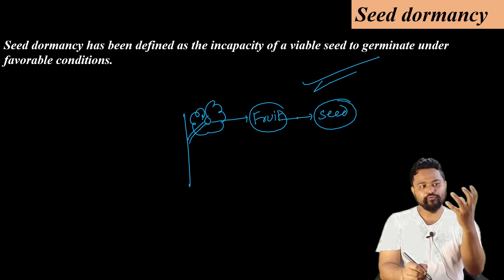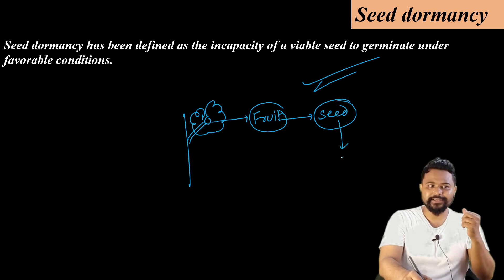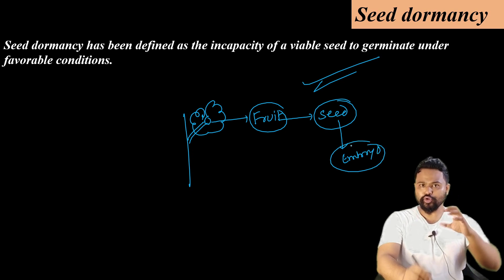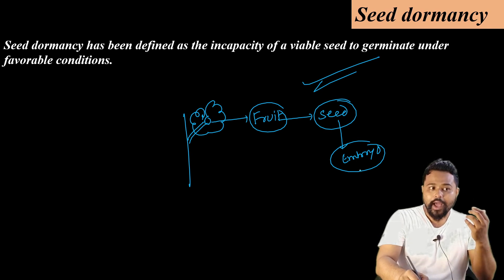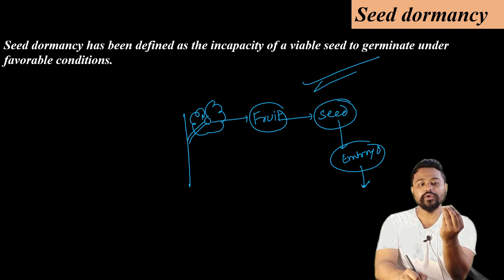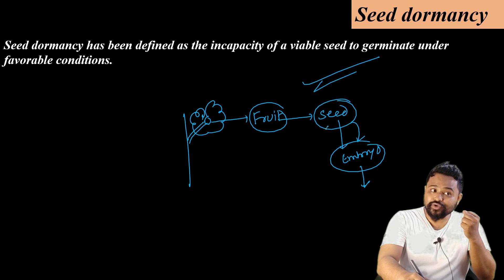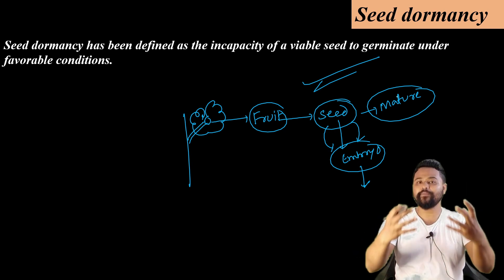The fruit contains a seed. This seed contains an embryo. The embryo develops into a whole small plant. So a seed contains an embryo that matures into a plant. The seed matures as the embryo develops.